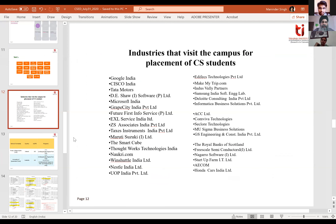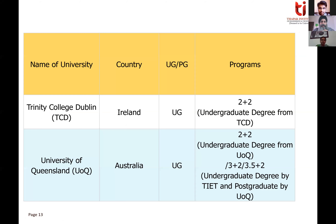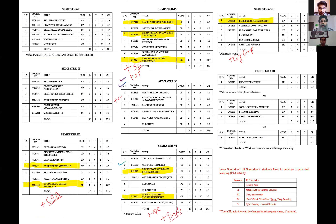Now let's address what many of you are asking — the difference between the various computing variants at Thapar. Computer Engineering is the base program started in 1992. Computer Science Engineering is our newer program started in 2018 at Derabassi and 2019 in Patiala. The first year is common — there is no change between both programs. Differences appear from the second year onward.